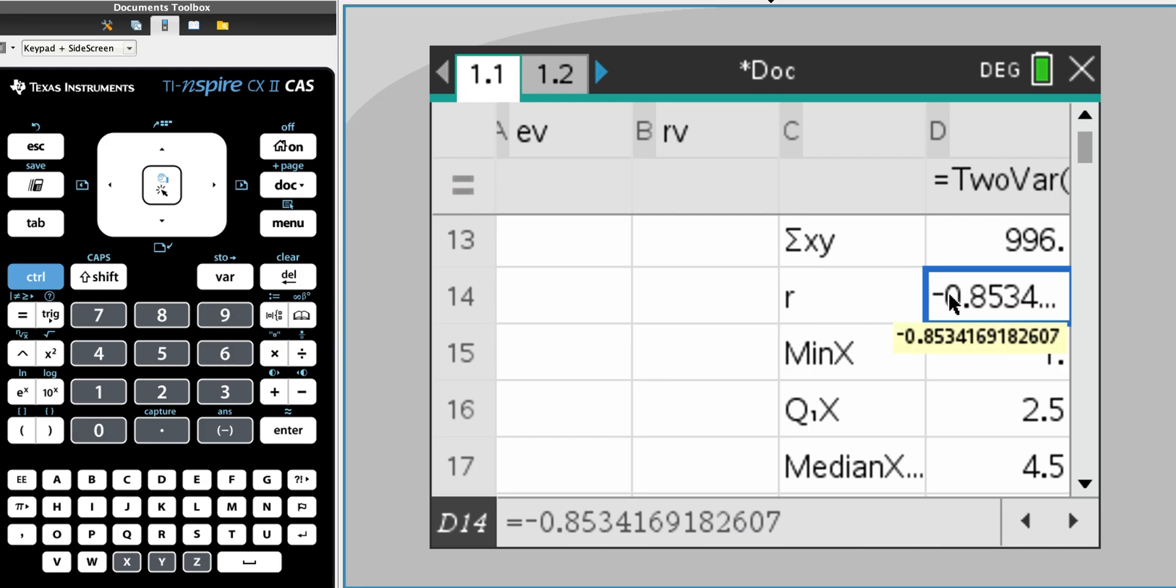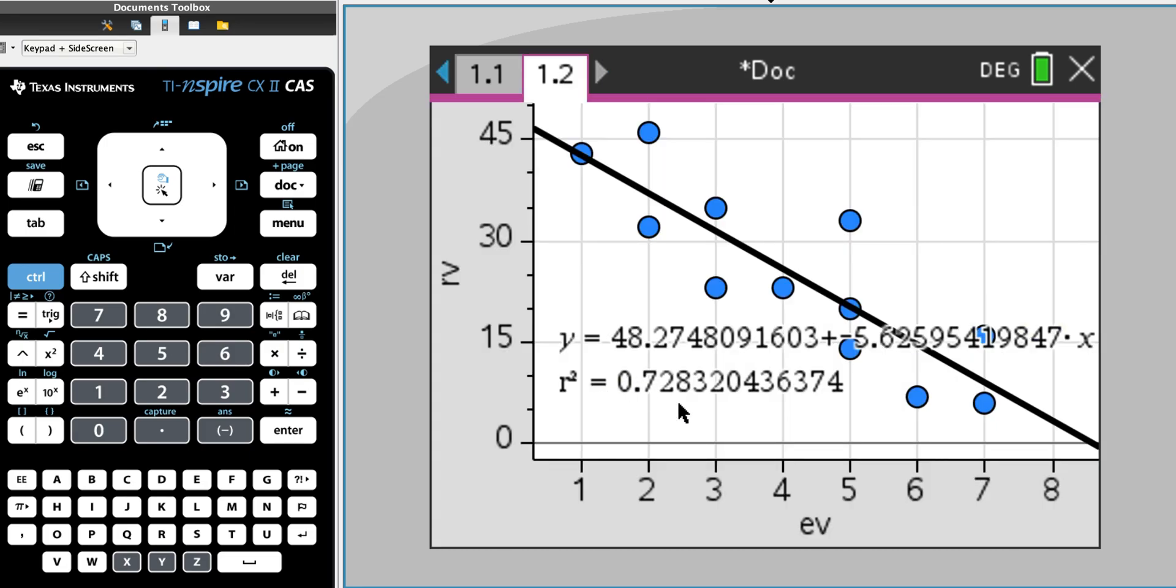This r-squared value gives us another indication as to how closely related these two variables are. We can turn this r-squared value into a percentage by multiplying by 100, which gives us 72.8.